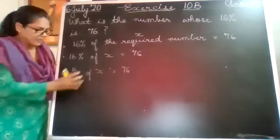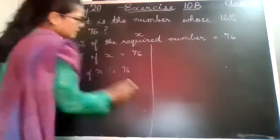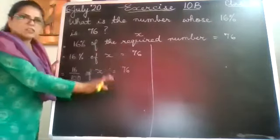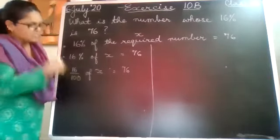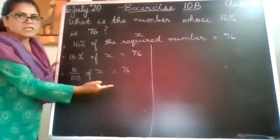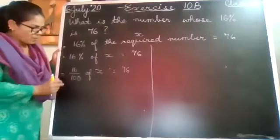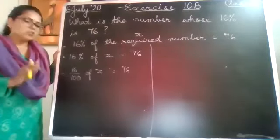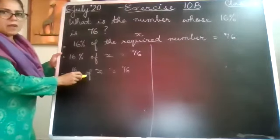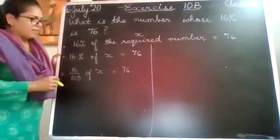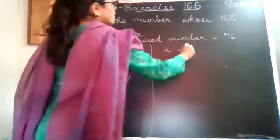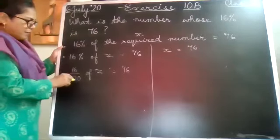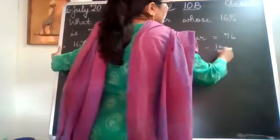Now what happens? We'll keep the unknown on one side and all the knowns we take to one side. We have done these type of questions earlier. So I'll let X remain here before the equal to sign. I'll let 76 also remain there after the equal to sign. I will take this to the other side. Now when this goes to the other side, you have to write the opposite always. So this will be written as 100 upon 16 when it goes to the other side.